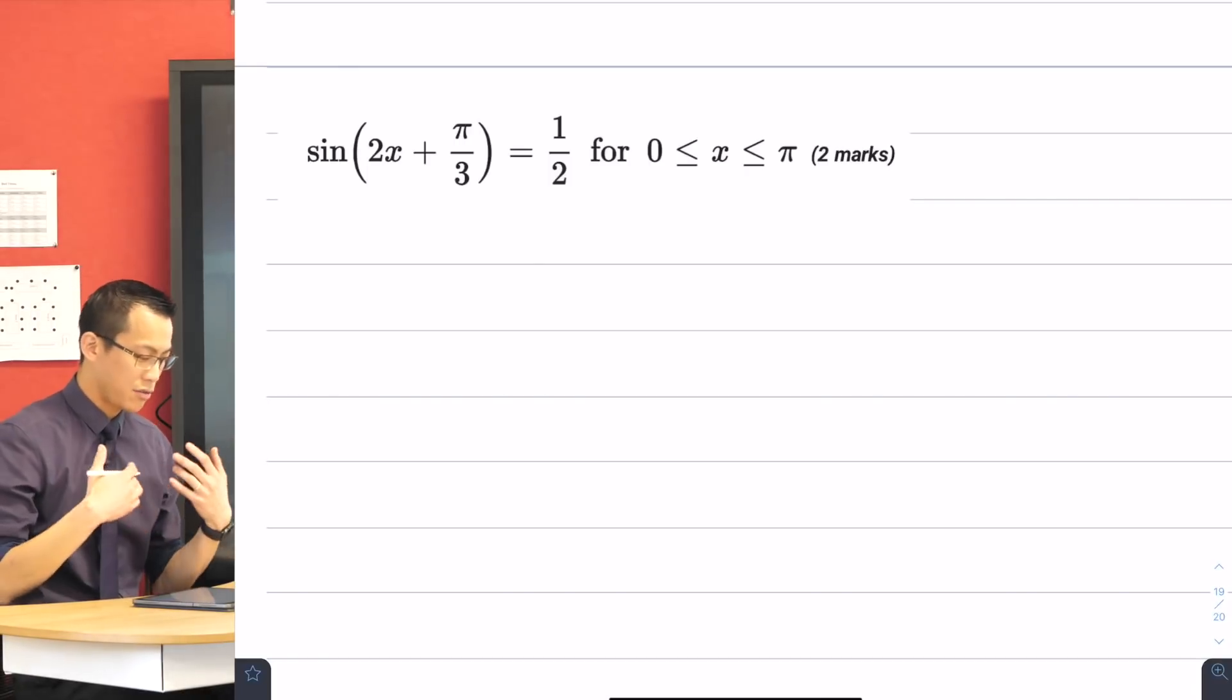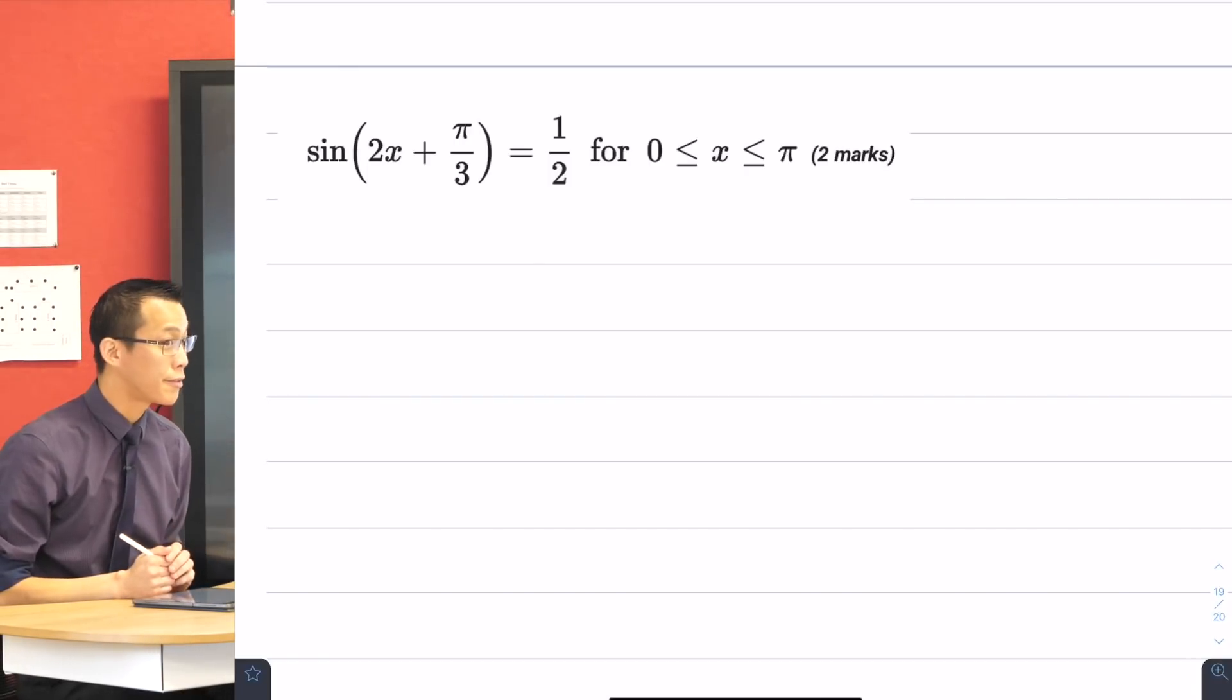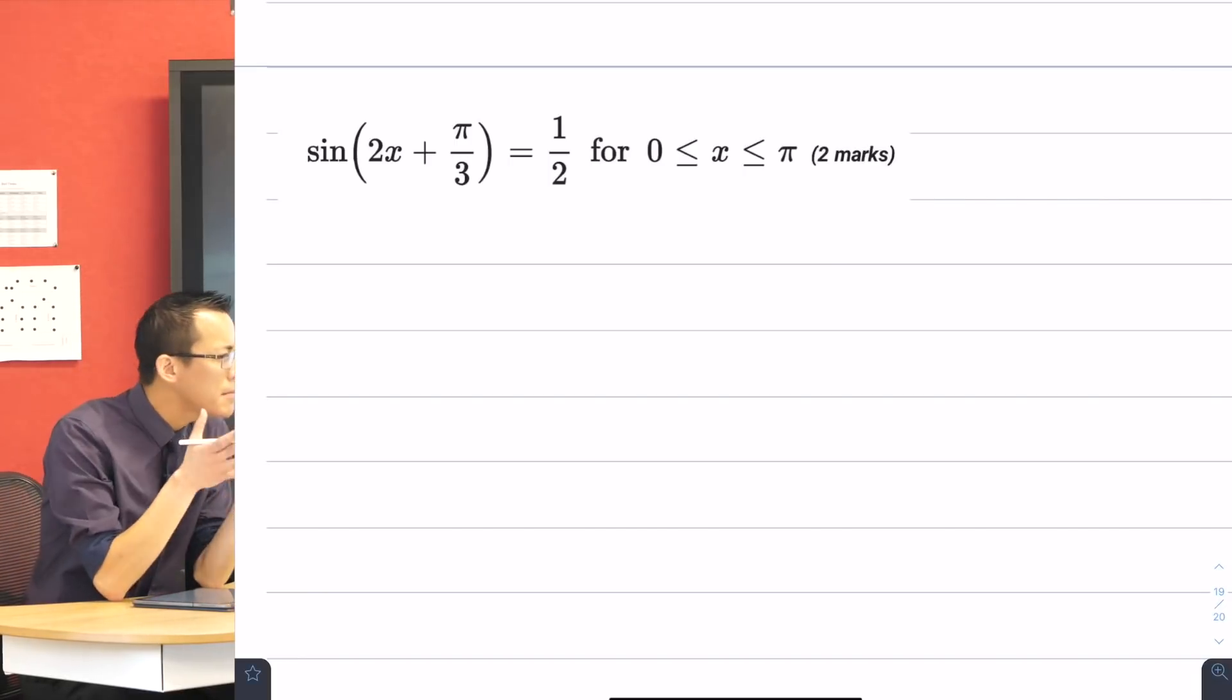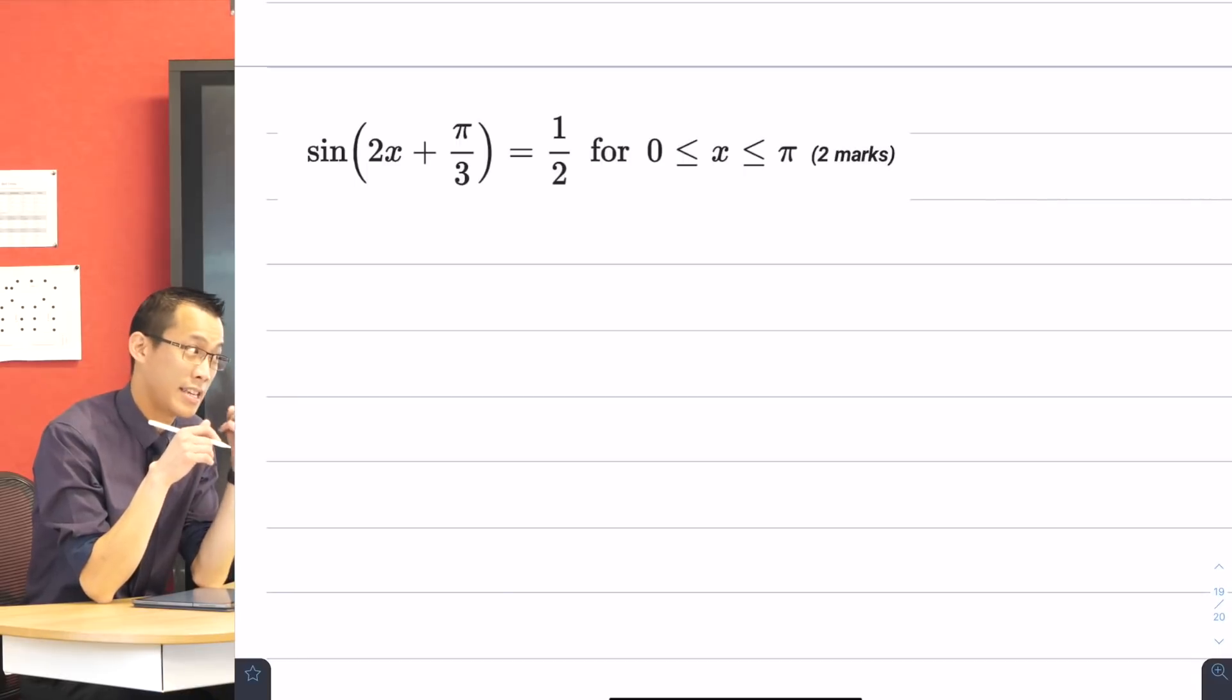The question is sine 2x plus π on 3 equals a half, and then you've got a domain provided. Let me ask you this, what immediately strikes you as the tough parts of this question? I can see at least two.